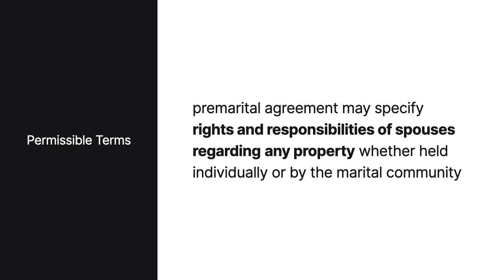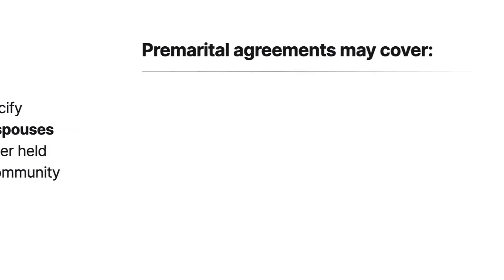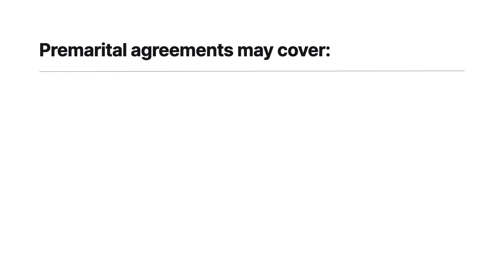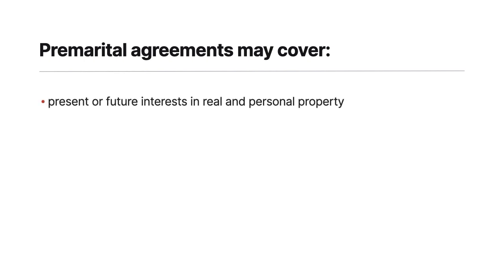Now that we know how to form a premarital agreement, let's explore the permissible scope of such agreements. Generally, a premarital agreement may specify the rights and responsibilities of spouses regarding any property, whether held individually or by the marital community. The permissible scope of premarital agreements is therefore broad.